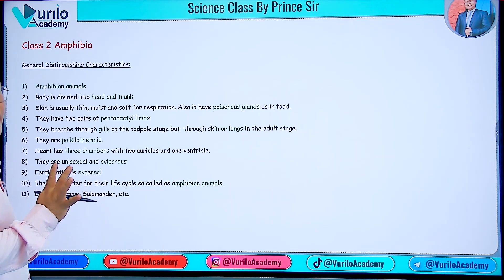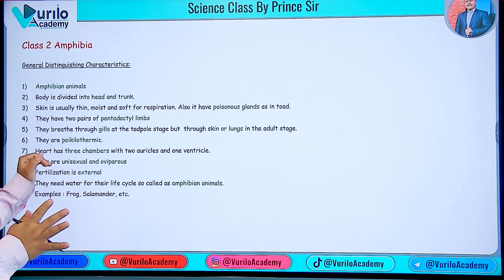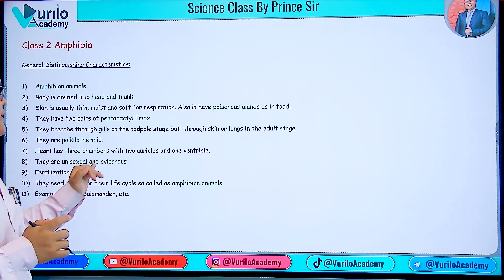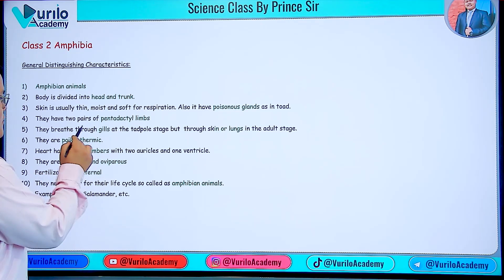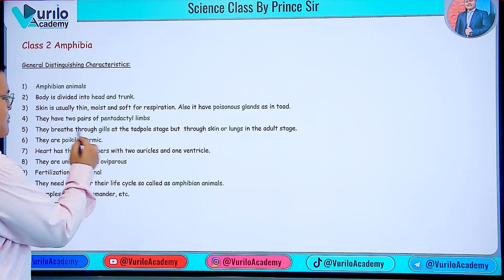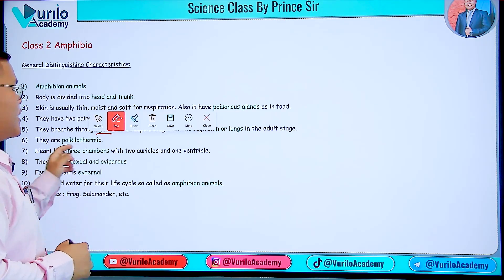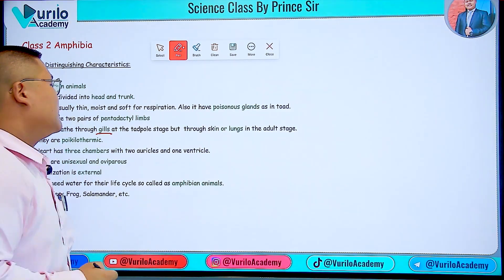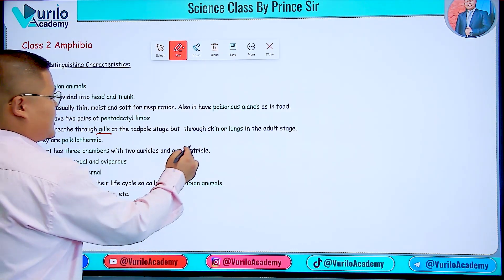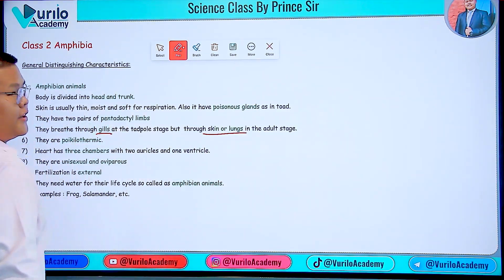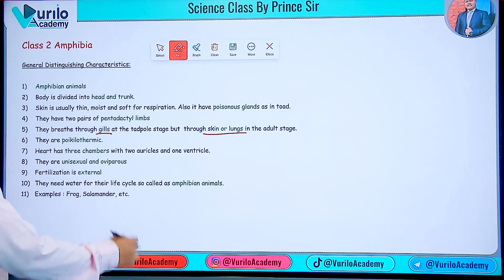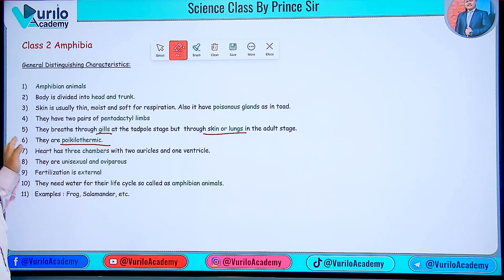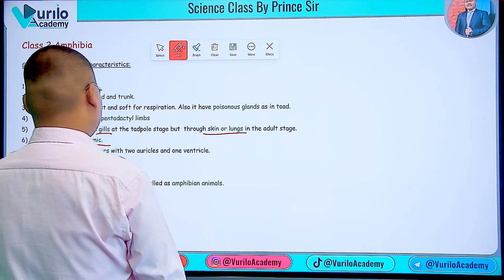Amphibians breathe through gills in the tadpole stage, because they are in water. On land, they breathe through lungs. They are also poikilothermic, meaning they are cold-blooded animals.